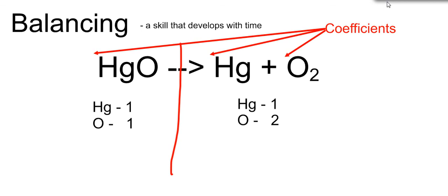These are the big numbers that go at the beginning of a molecule. They don't go in the middle. They don't go at the end. They go only at the beginning. And they are the only thing we can change when balancing a chemical reaction.